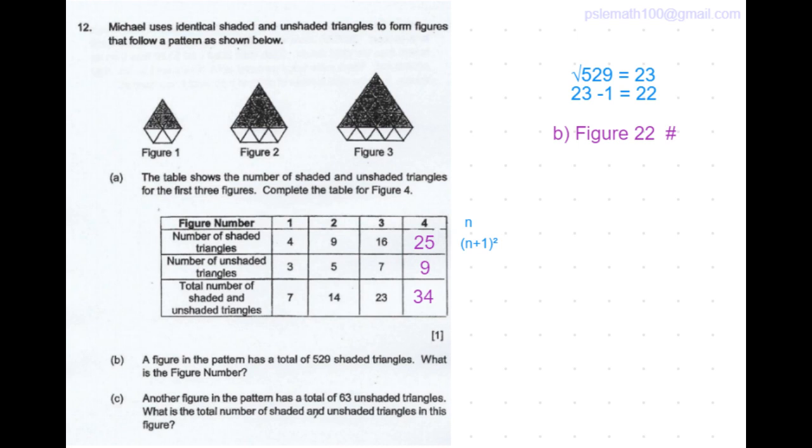So that answers part B of the question. Now coming to part C of the question. Another figure in the pattern has a total of 63 unshaded triangles. What is the total number of shaded and unshaded triangles in this figure?